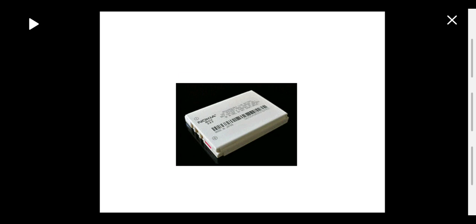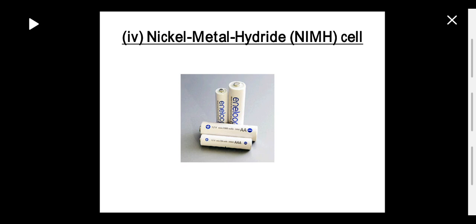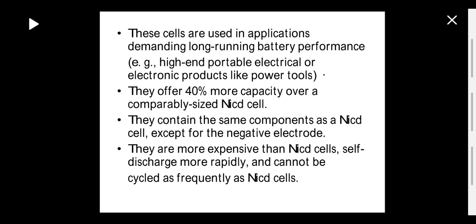Next is the nickel metal hydride cell, used in applications demanding long-running battery performance, such as high-end portable electronic products like power tools. They offer 40% more capacity over a comparably sized nickel cadmium cell. They contain the same compounds as nickel cadmium except for the negative electrode. However, they are more expensive than nickel cadmium cells, self-discharge more rapidly, and cannot be cycled as frequently as nickel cadmium cells.